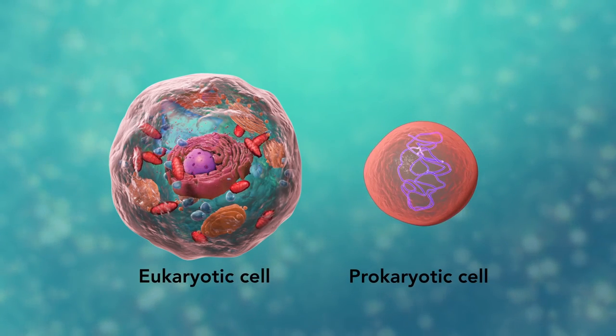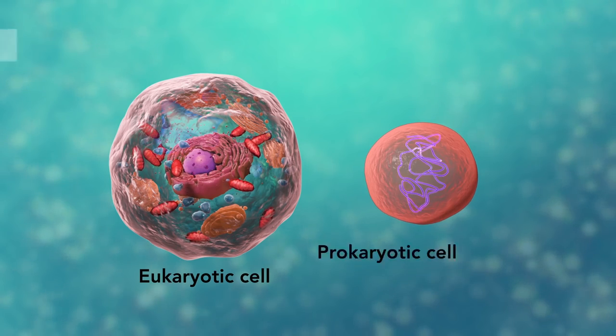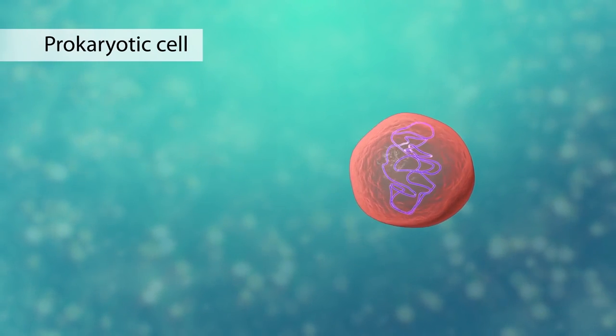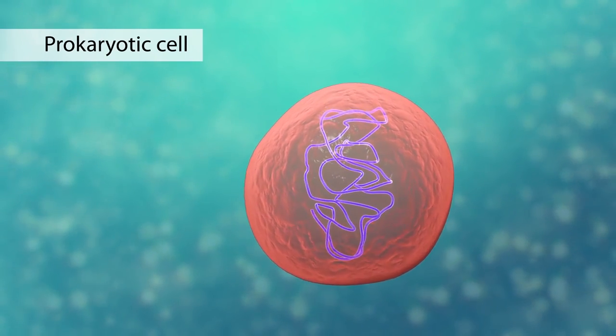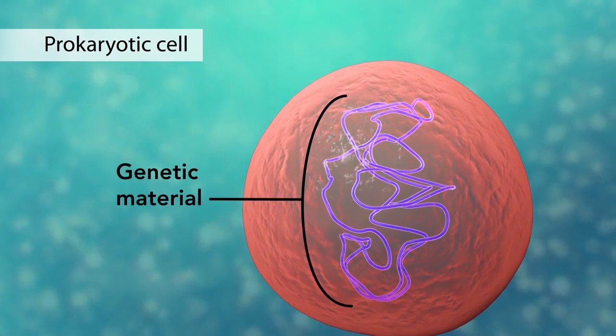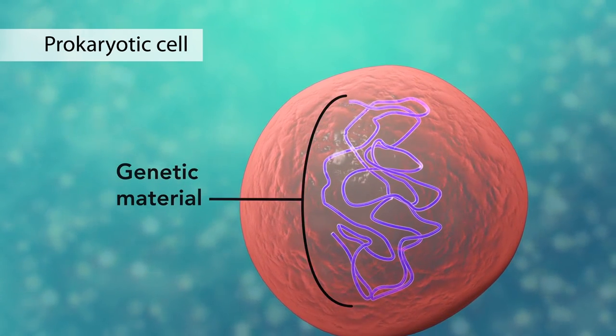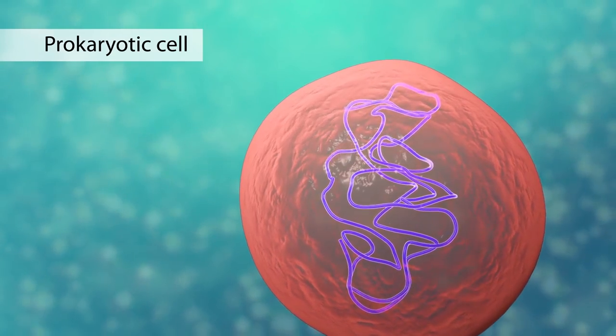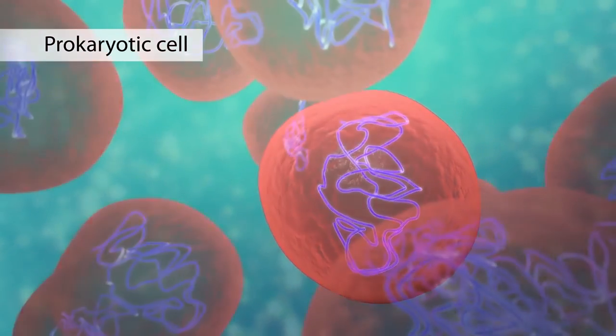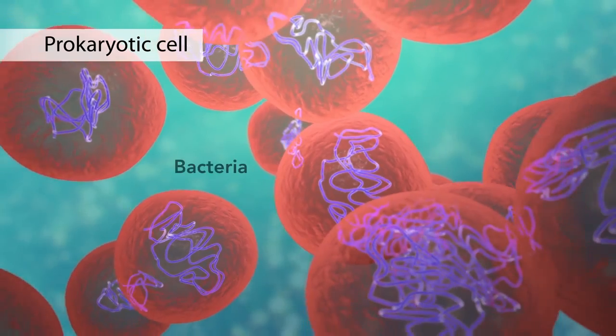The second category is prokaryotic cells. They don't have a nucleus or membrane enclosed organelles. They do have genetic material but it's not contained within a nucleus. Prokaryotic cells are always one-celled or unicellular organisms such as bacteria.